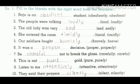Fifth: 'Our soldiers fought ___.' How did they fight? We need an adverb — so the answer is 'bravely.' Sixth: 'It was a ___ decision.' Here 'decision' is our noun, so we describe it with an adjective — the answer is 'proper,' not 'properly.' Seventh: 'Be ___ not to break the glass' — so 'careful.' Eighth: 'This is not ___ gold.' Gold is a material noun; we describe it with an adjective — so the answer is 'pure.'